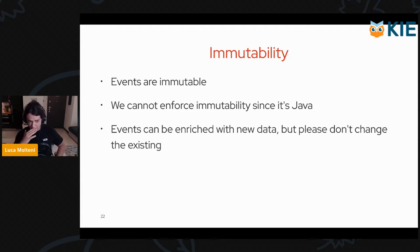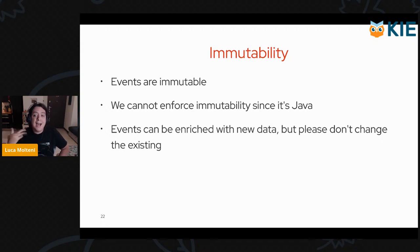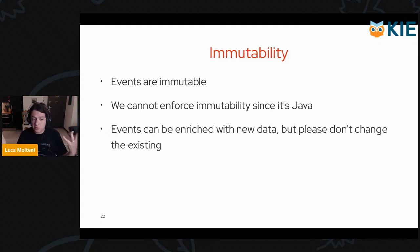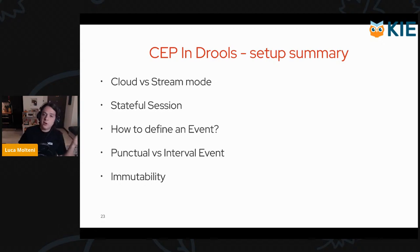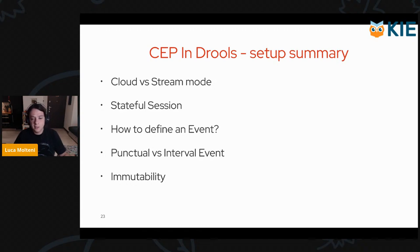One other important thing is immutability. Immutability is the idea that you shouldn't change event objects when they're inserted in working memory — events are immutable. We cannot enforce immutability because Drools is based on Java, and Java doesn't enforce immutability. But please do not change the timestamps of events; otherwise, something bad will happen to your system. What you could do instead is enrich events with new data — but please don't change existing data. We covered: Cloud vs Stream mode, stateful session, how to define an event, punctual vs interval events, and immutability.